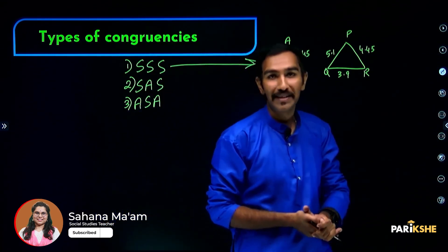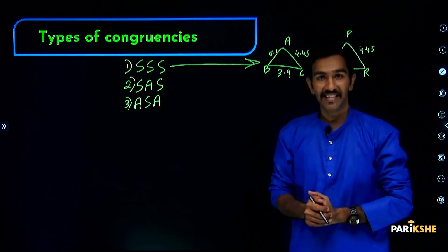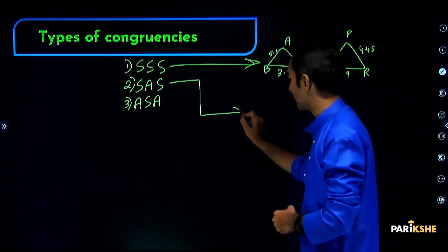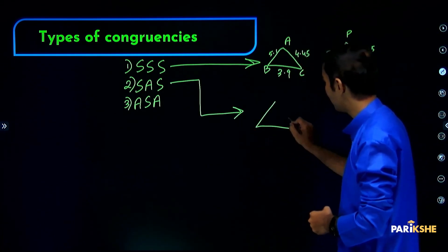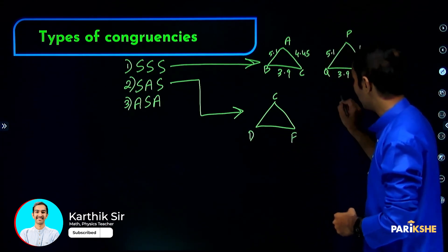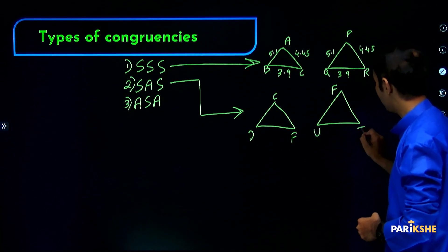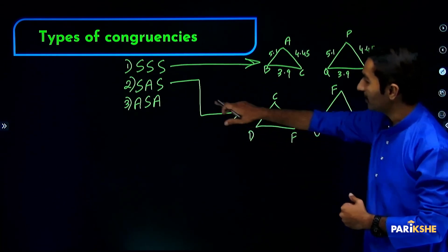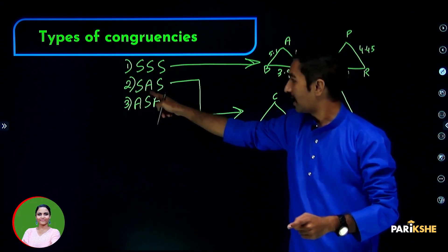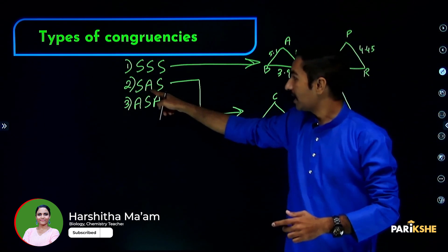When all three side measurements are the same, we write triangle ABC is congruent to triangle PQR from SSS congruency. Understood SSS congruency? Now let's see SAS congruency. Here we take triangle CDF and triangle FUT.